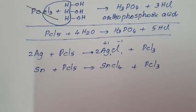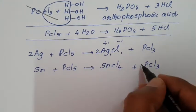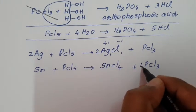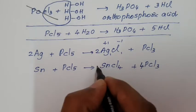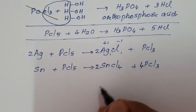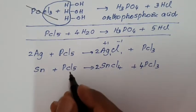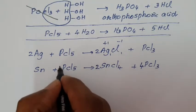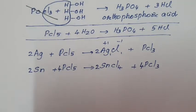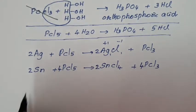To balance this reaction, balance chlorine first. For phosphorus: 4 phosphorus atoms, 4 × 3 Cl = 12 plus 8 equals 24 chlorine atoms total. The equation is balanced.